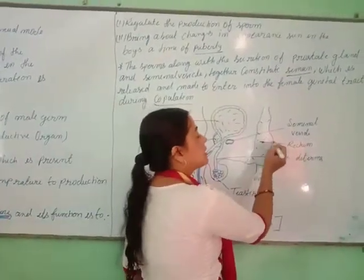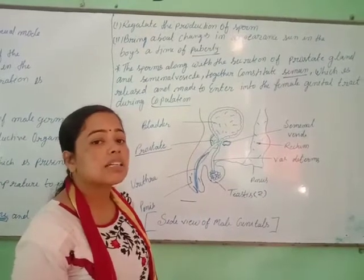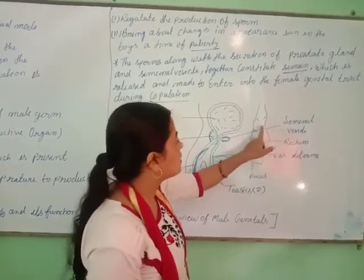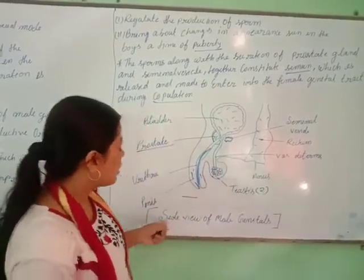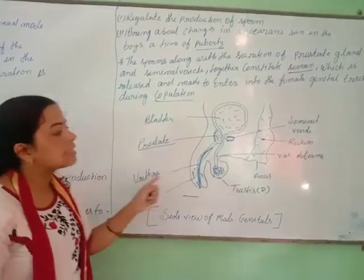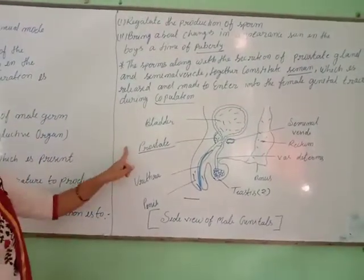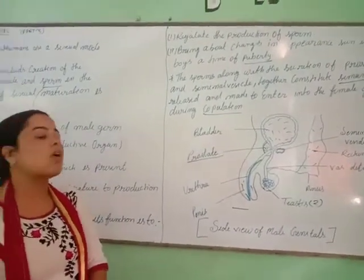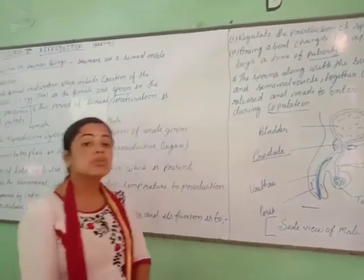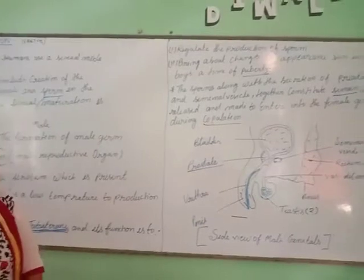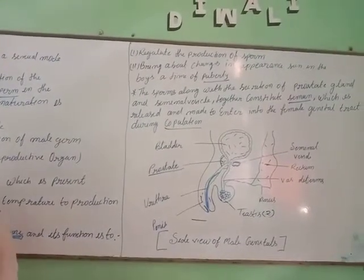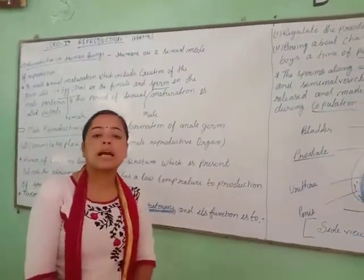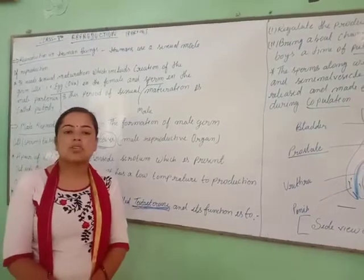This is the rectum, responsible for releasing waste material out of the body. This is the seminal vas, which we have already talked about. This is the side view of the male genital organ and in the next video we are talking about the female reproductive organ. Your work is to note this topic and these important notes in your notebook and make questions from this video. If you have any problem, just leave your message in our comment box. Thank you.